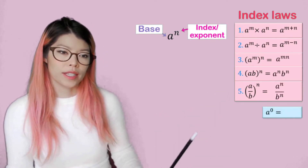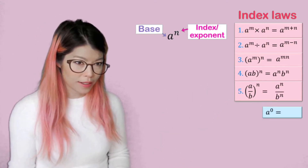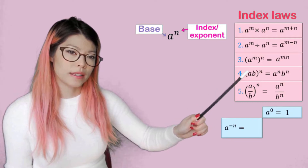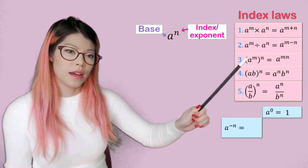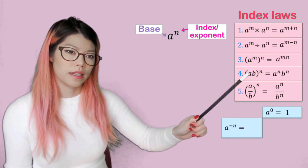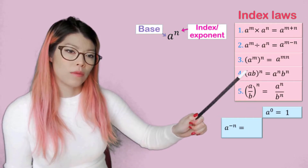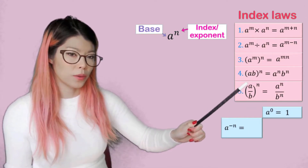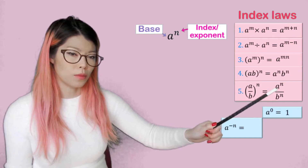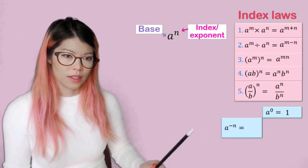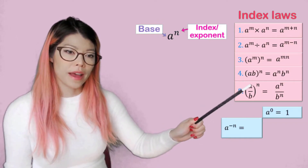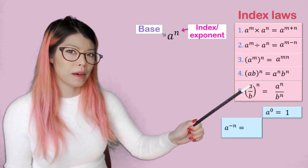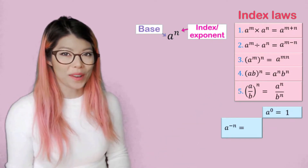Now notice that a to the zero is one. That makes sense because a inside index law four and five, the powers of a in there are one and not zero, because otherwise the a would disappear — it would just be one. So if it doesn't have a power or index, then the invisible number that's not written is always one.